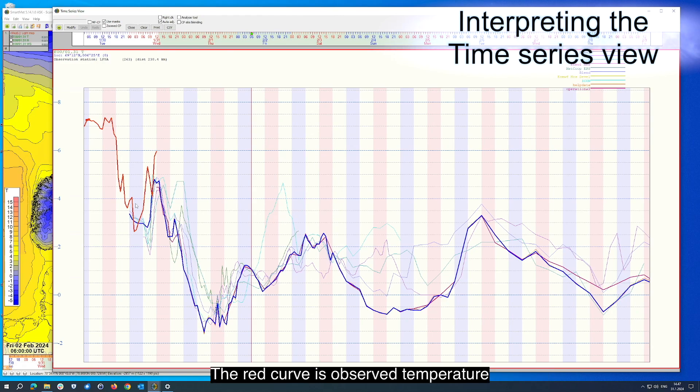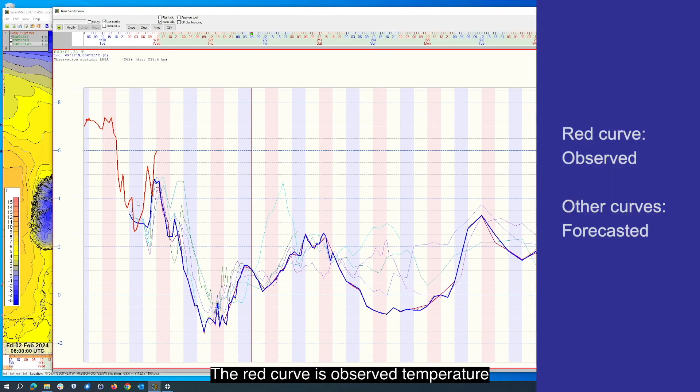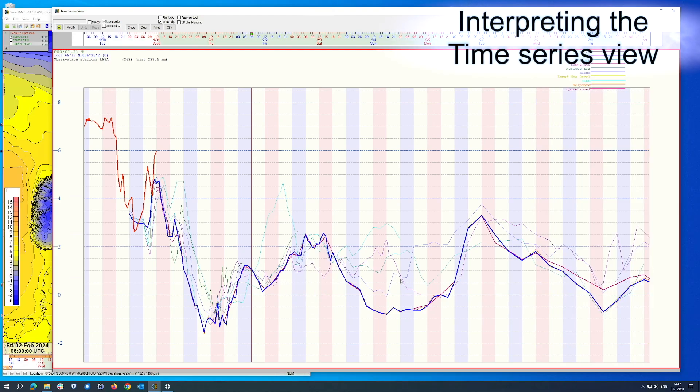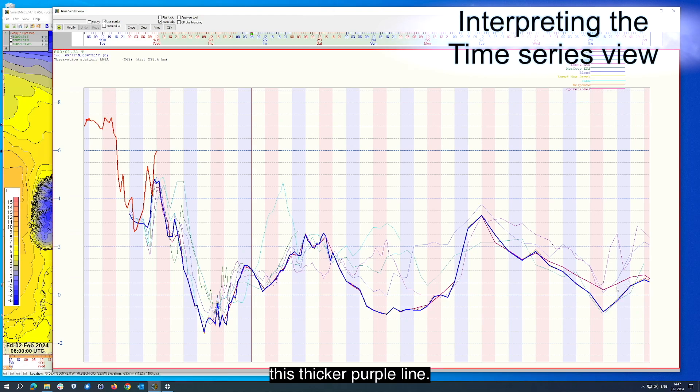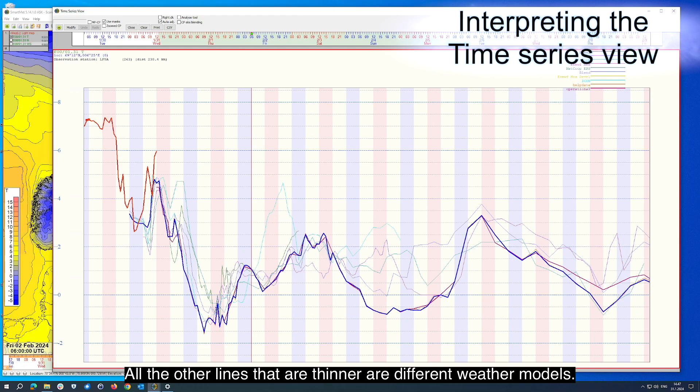The red curve is observed temperature and all the other curves are forecasted temperatures. If you are editing the operational data, shown also here on top right corner, it's this thicker purple line. All the other lines that are thinner are different weather models.